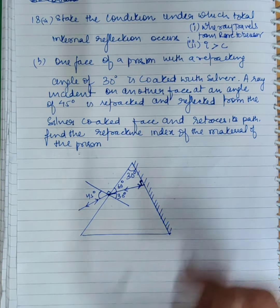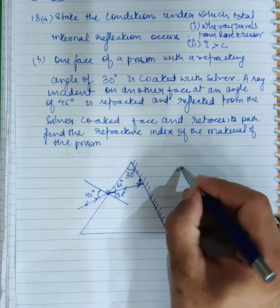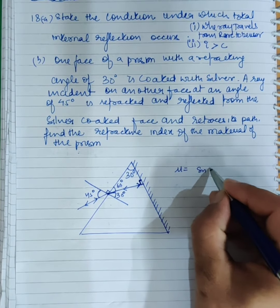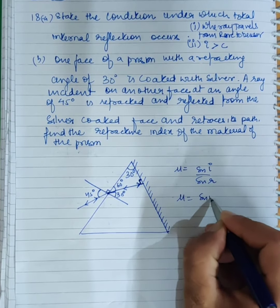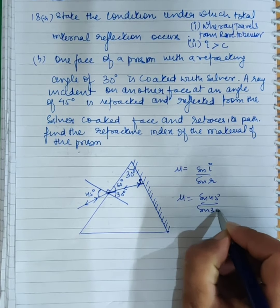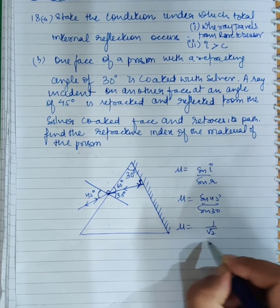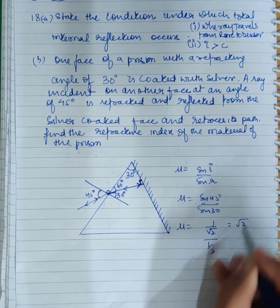Find the refractive index of the material. So we got 30 degrees. The answer comes: μ equals sin i by sin r. So μ equals sin 45 by sin 30, which is 1 by root 2 upon 1 by 2. The answer is root 2.